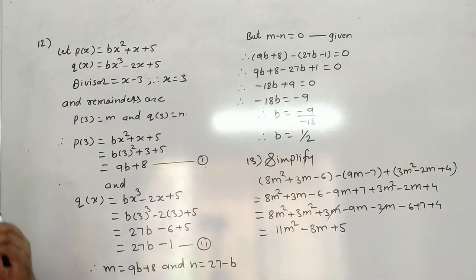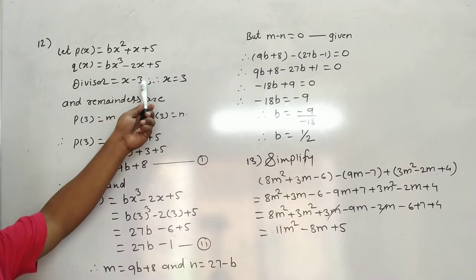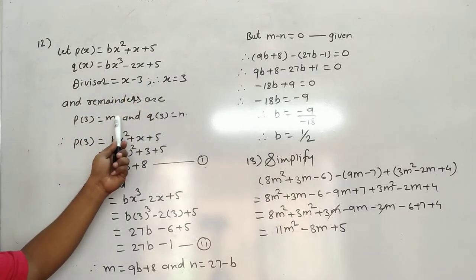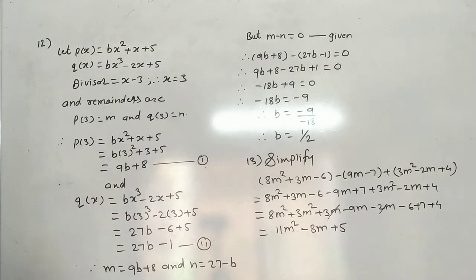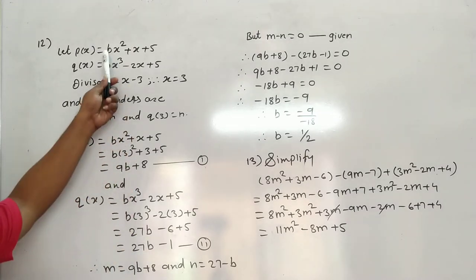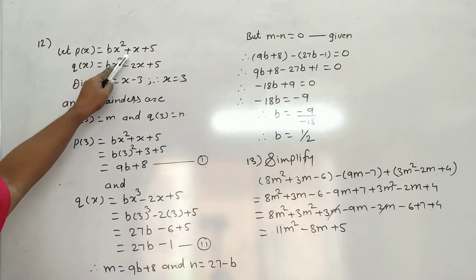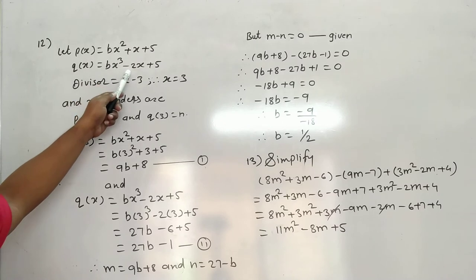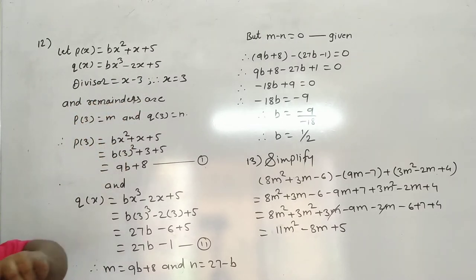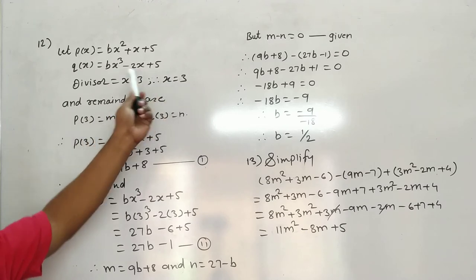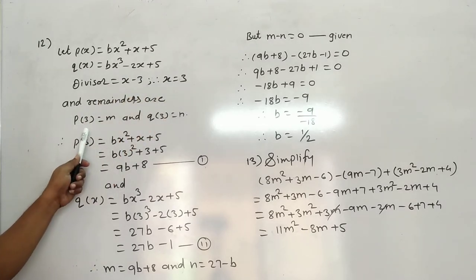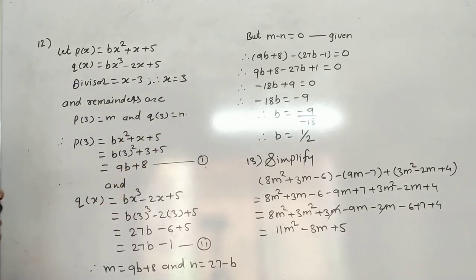Since m - n = 0, we find b using the remainder theorem. Divisor is x - 3, so x = 3. Therefore p(3) = m and q(3) = n. p(3) = b(3²) + 3 + 5 = 9b + 8. So m = 9b + 8, equation 1.